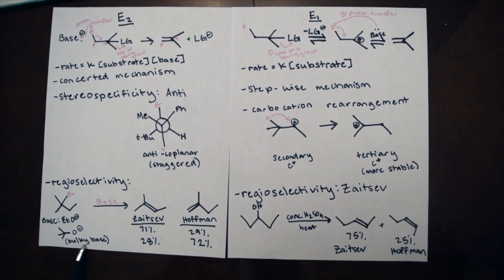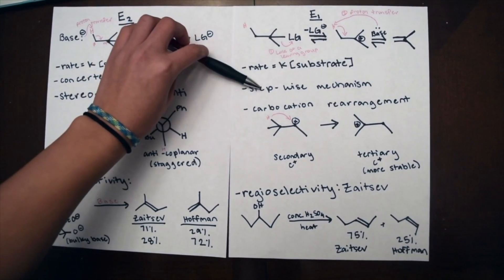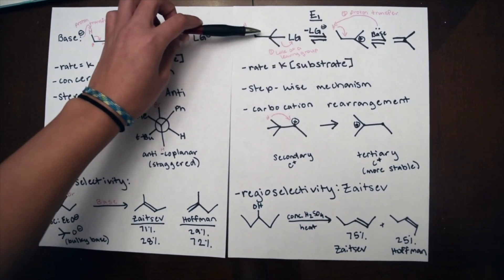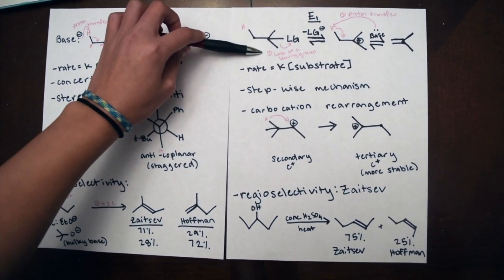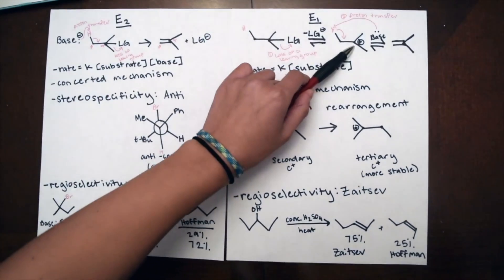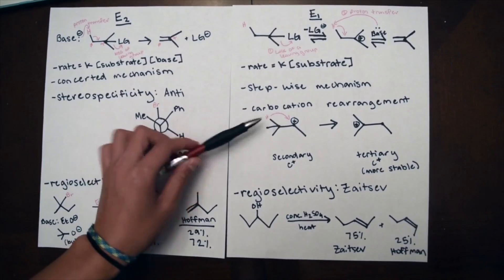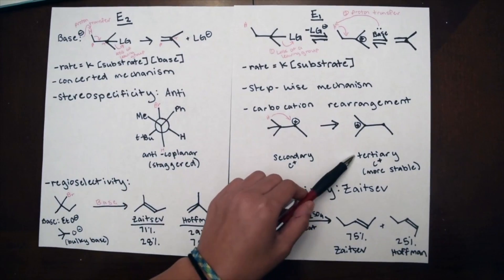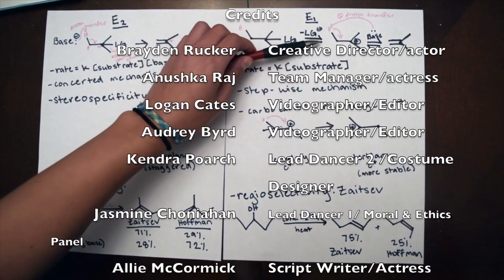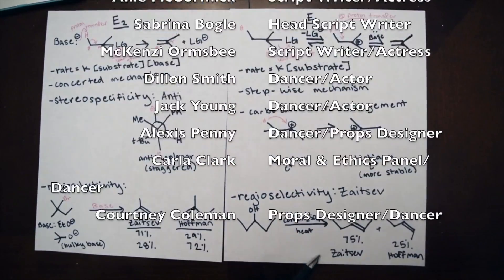The Hoffman product is only favored when using a bulky base such as tert-butoxide. An E1 reaction is a unimolecular stepwise mechanism where the rate depends only on the substrate. The first step, which is the rate-determining step, a good leaving group leaves such as H2O, forming a carbocation intermediate that will undergo rearrangement if it is not placed on the most substituted carbon, which is preferably tertiary. In the last step, a proton is removed from the beta carbon adjacent to the sp2 hybridized carbocation, and a Zaitsev product is most commonly formed.